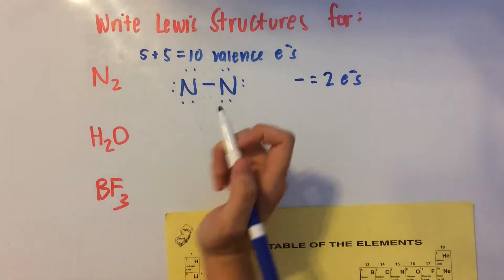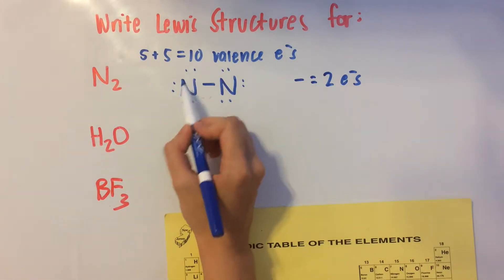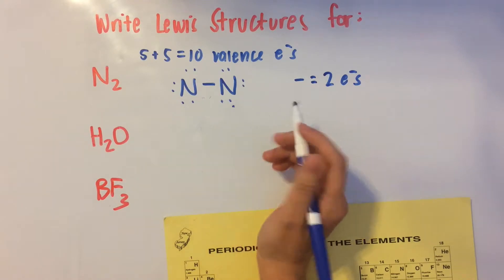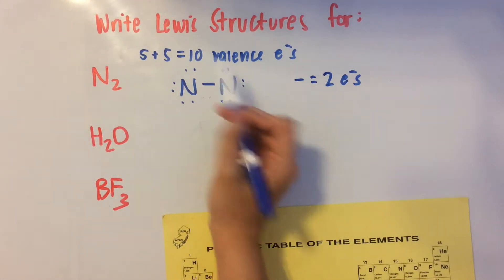Okay. So now let's count how many valence electrons we have. 1, 2, 3, 4, 5, 6, 7, 8, 9, 10, 11, 12, 13, 14. That is way too much. We want 10.